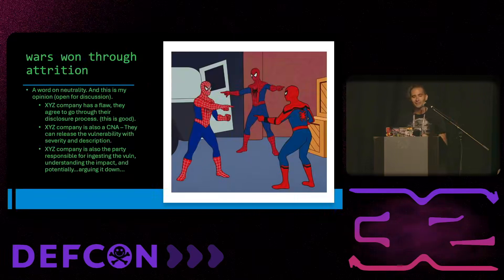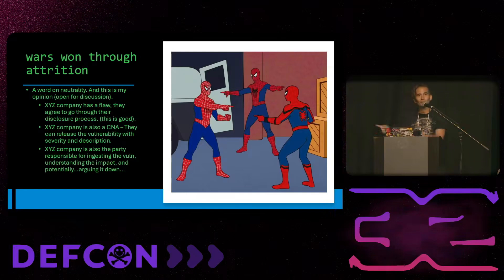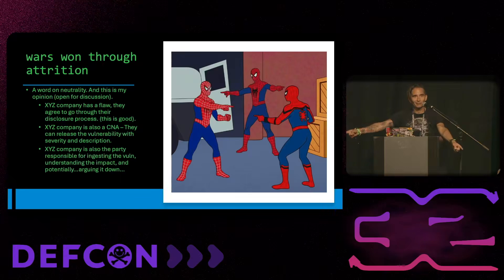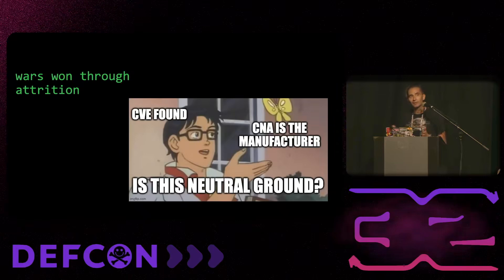Wars went through attrition — this is my view of companies that write their own CVEs. It's kind of hard because if you write the CVE and I'm the researcher, who provides the neutral ground? There is no neutral ground. I write the CVE, here's what's going to happen, here's the severity — nobody's understanding what's actually going on. Does this feel like neutral ground? If you make the CVE and have to argue with the same people who are the owners of the project, you basically cannot go off of anything. This is not neutral in my opinion.